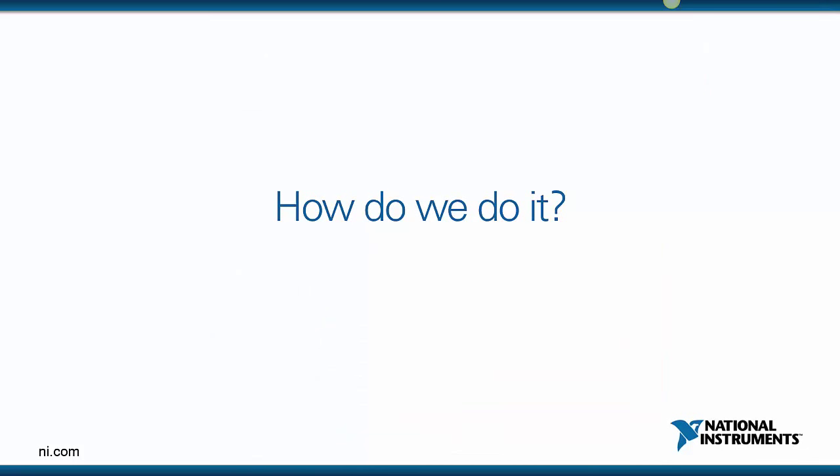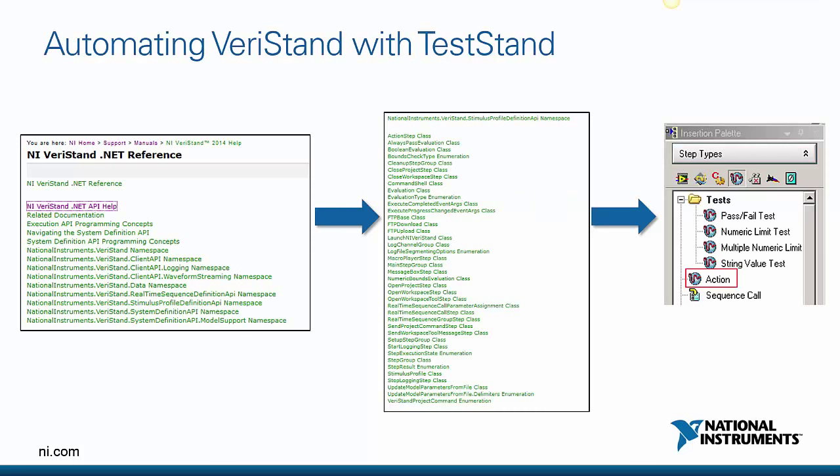The magic and real value comes from putting all of these tools together in an automated framework — where Veristand runs the real-time sequences and real-time tests, TestStand automates all those tests and links to our requirements databases, and then we send all that data to DIAdem for post-processing, advanced report generation, and data analysis and mining. I'm going to turn it over to Lynn to talk through some examples of how we could go about automating and performing these types of tests.